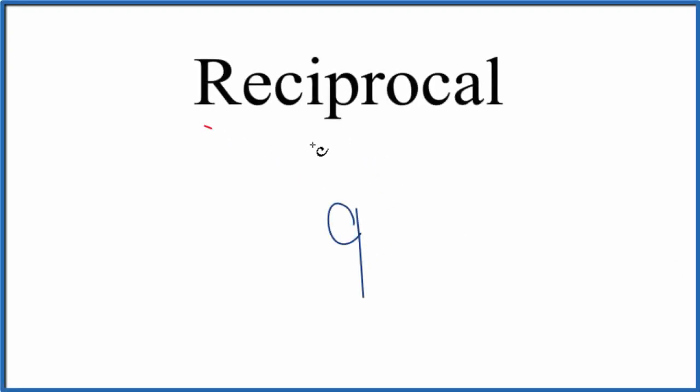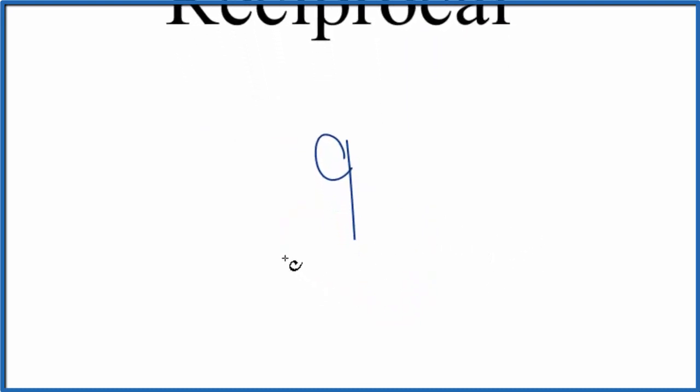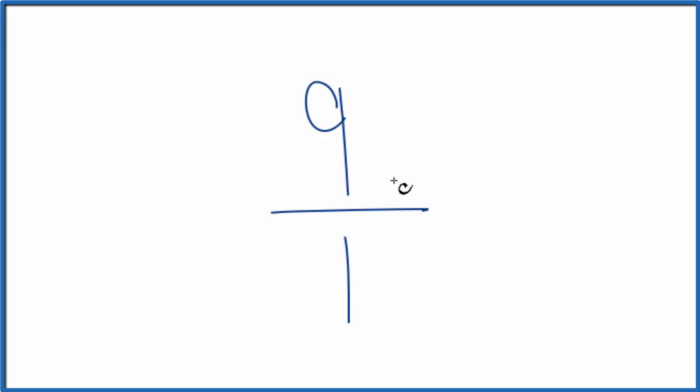All right, let's find the reciprocal for nine. So here's how you do it. We can think of nine as nine over one. Nine divided by one, that's still nine.